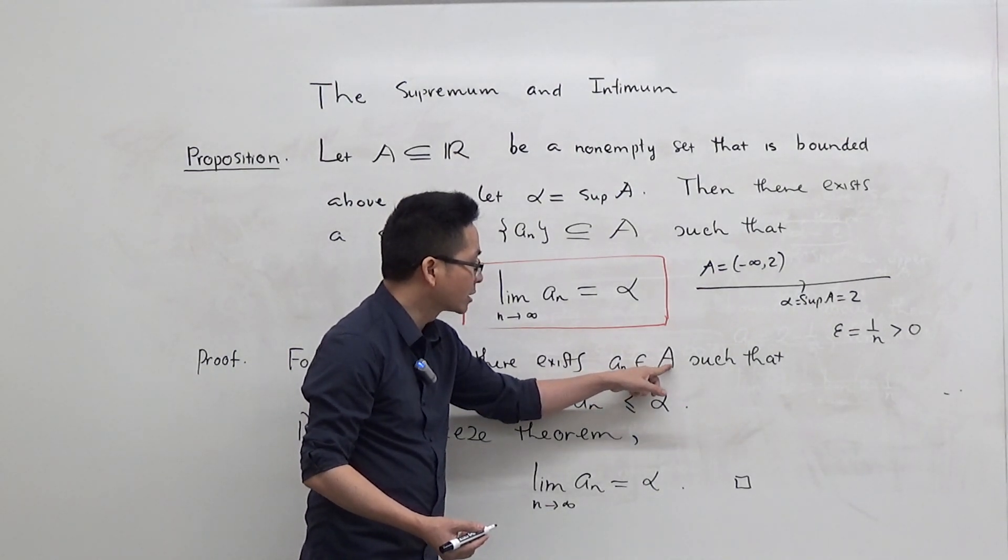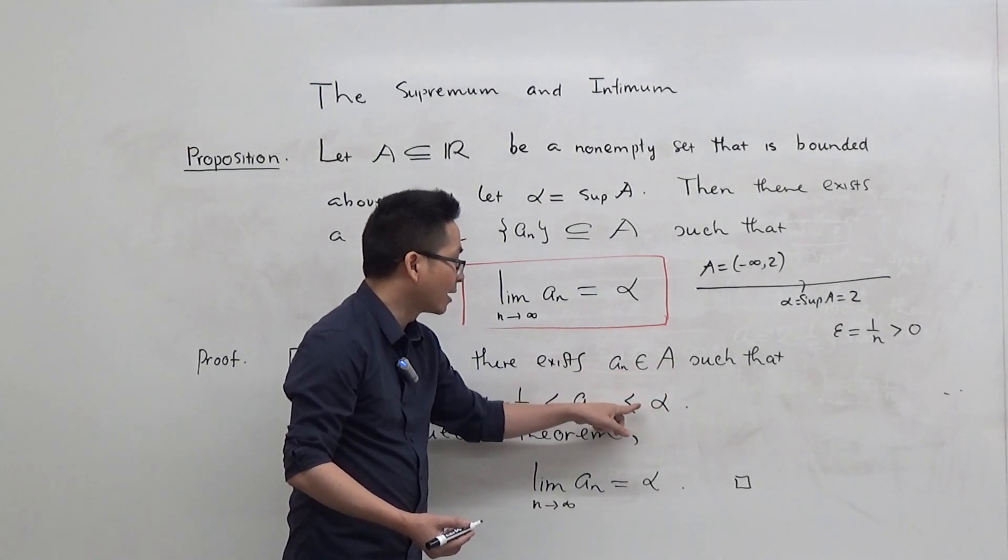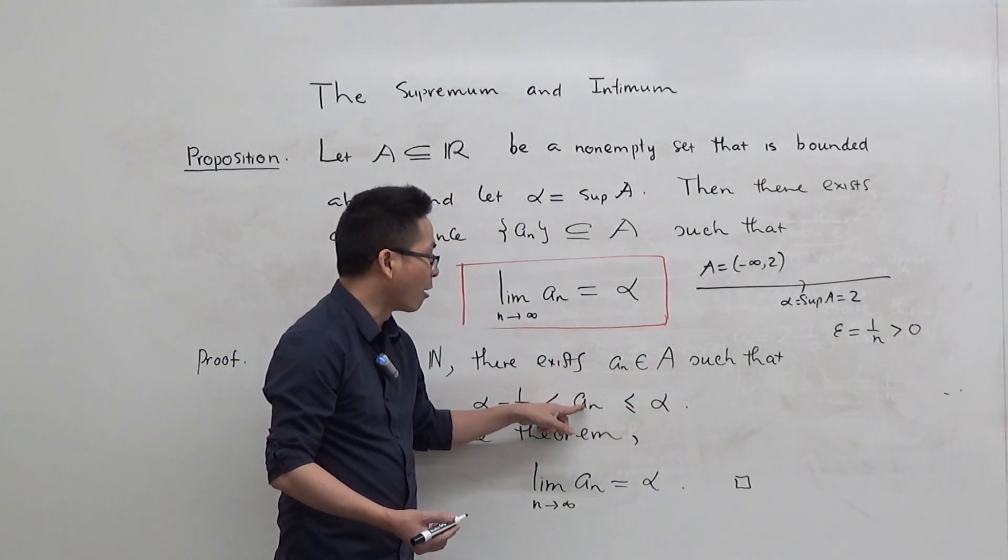because A_n belongs to A, and alpha is an upper bound of the set A, alpha is greater than or equal to A_n.